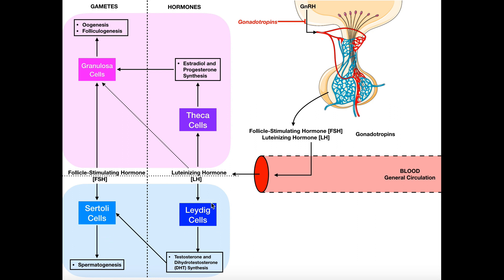Going back to the Leydig cells — LH causes them to produce testosterone and dihydrotestosterone. These hormones can also act directly on the Sertoli cells, which further promotes spermatogenesis. So spermatogenesis is strongly assisted by Sertoli cells, and those cells are stimulated by three hormones: follicle-stimulating hormone, testosterone, and dihydrotestosterone.